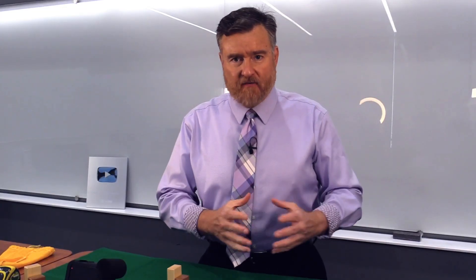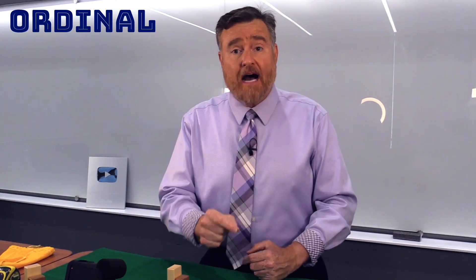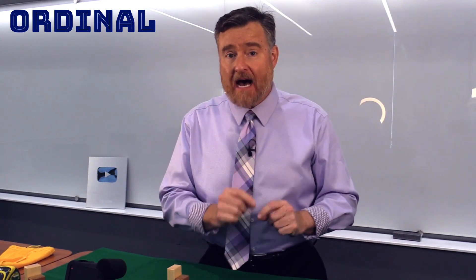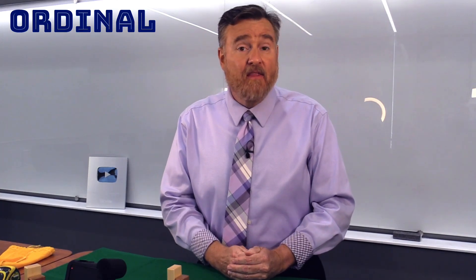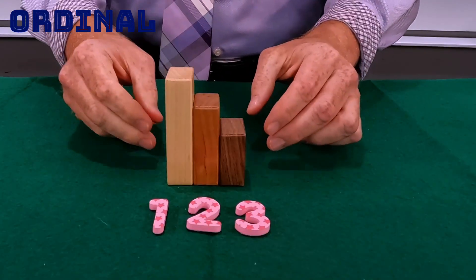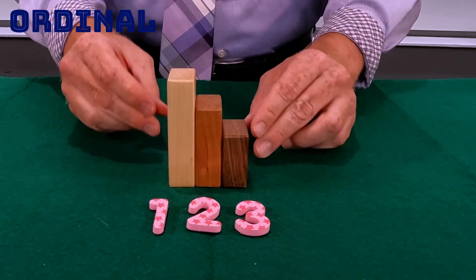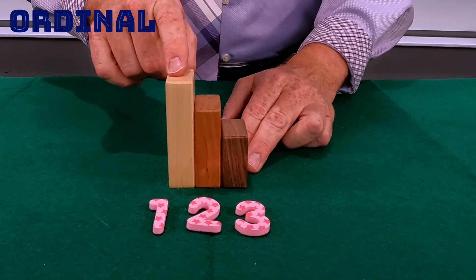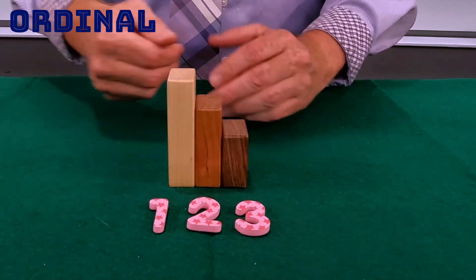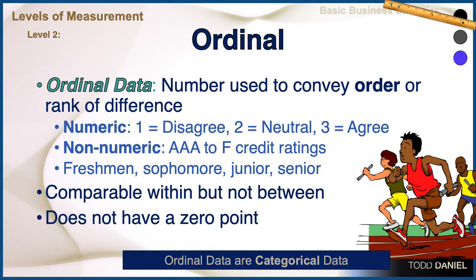There's a second type of categorical data called ordinal. Like nominal data, ordinal data tell us differences, but ordinal data come with some kind of underlying order, so we can make some comparisons within, but not between. Here we have some ordinal data — first, second, and third place. You could think of an Olympic medal platform. The numbers convey an order; their ranks convey a difference. We could use numeric values in answer options, such as 1 equals disagree, 2 equals neutral, and 3 equals agree. But we could also use non-numeric symbols to represent ordinal data.